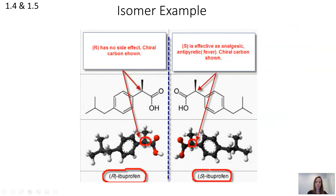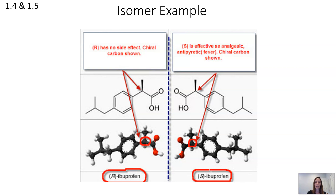An example of this is ibuprofen. There are two isomers of ibuprofen — one called R and one called S — which relates to the shape. They are mirror images of each other, kind of like your hands are mirror images of each other. Even though their molecular formulas are the same, that difference in structure leads to a difference in function. R ibuprofen is not effective, whereas S ibuprofen is an effective analgesic, or pain reliever.